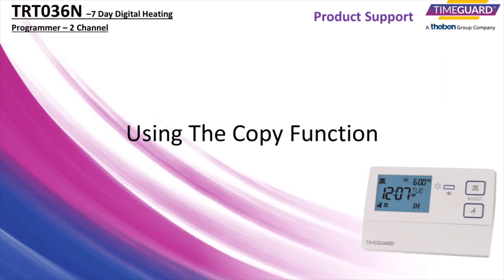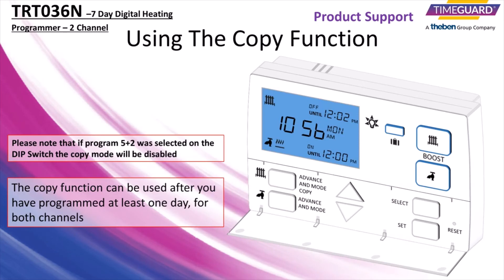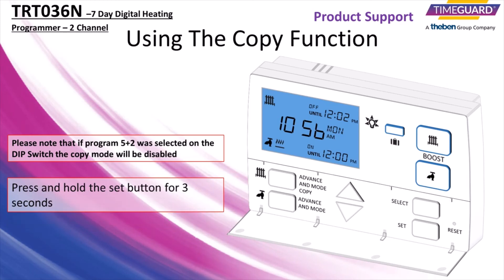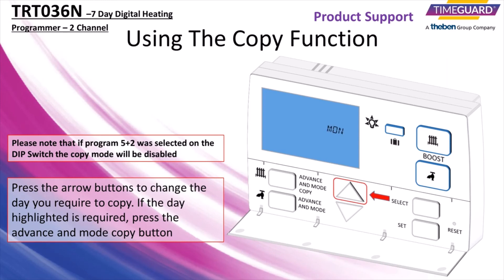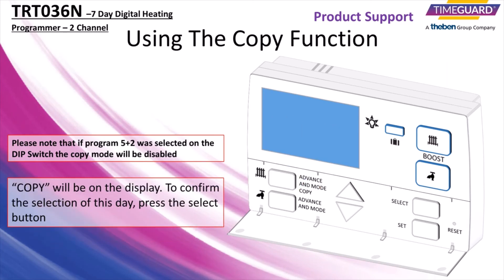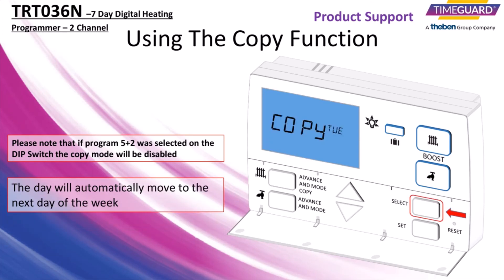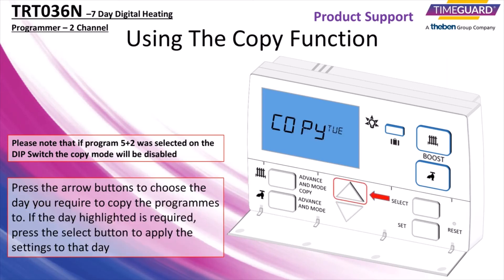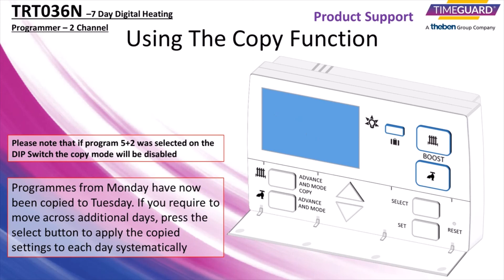The copy function can be used after you have programmed at least one day for both channels. Press and hold the set button for 3 seconds. Press the arrow buttons to change the day you require to copy. If the day highlighted is required, press the advance and mode copy button. Copy will be on the display. To confirm the selection of this day, press the select button. The day will automatically move to the next day of the week. Press the arrow buttons to choose the day you require to copy the programs to. If the day highlighted is required, press the select button to apply the settings to that day. Programs from Monday have now been copied to Tuesday. If you require to move across additional days, press the select button to apply the copied settings to each day systematically.